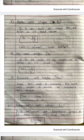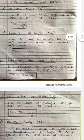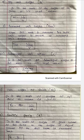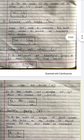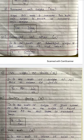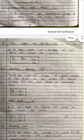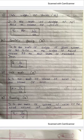Dry unit weight, gamma D, is the ratio of dry weight of soil solid to its total volume. Saturated unit weight: when soil is fully saturated, its bulk unit weight is known as saturated unit weight — it is the ratio of weight of saturated soil to its volume. Likewise, submerged unit weight, gamma dash, is the ratio of submerged weight of soil solid to its volume. Unit weight of solid, gamma S, is the ratio of weight of soil solid to the volume of soil solid — not sample — that is gamma equals Ws upon Vs.